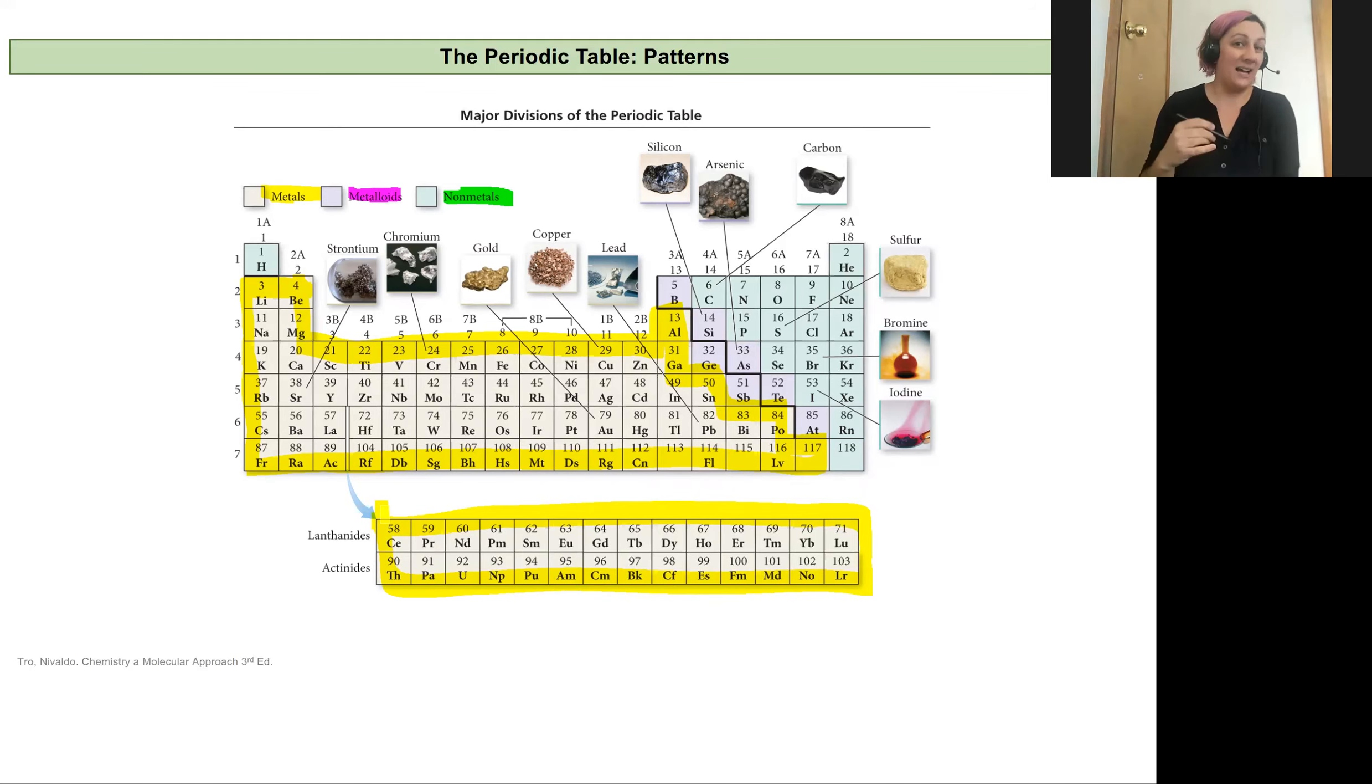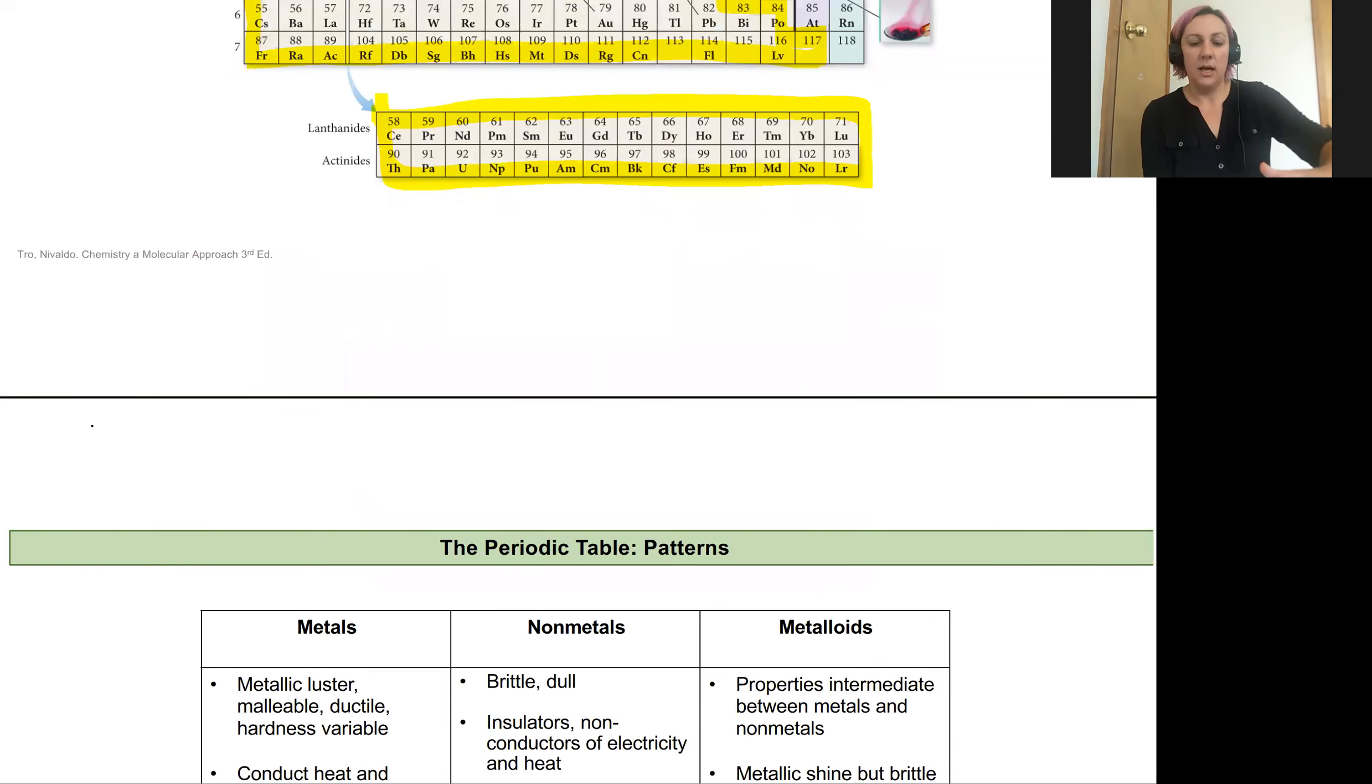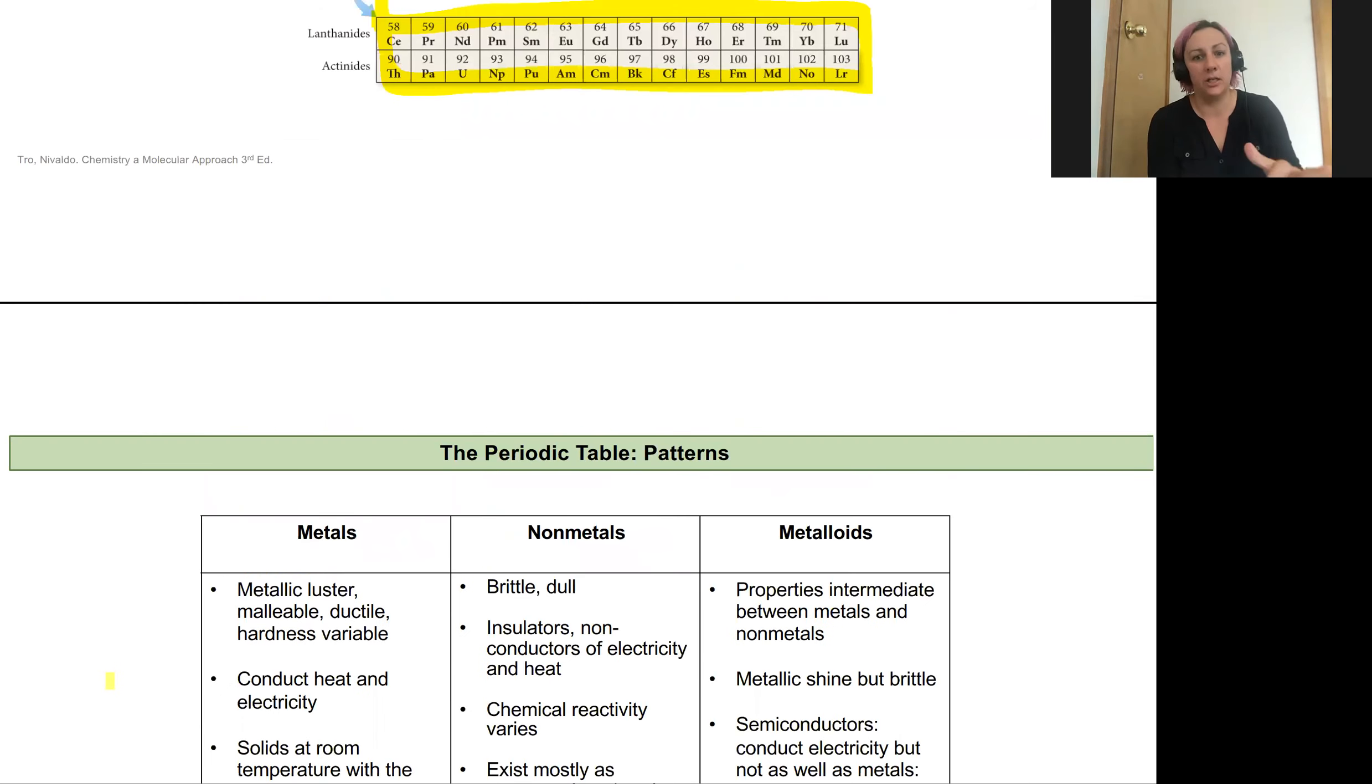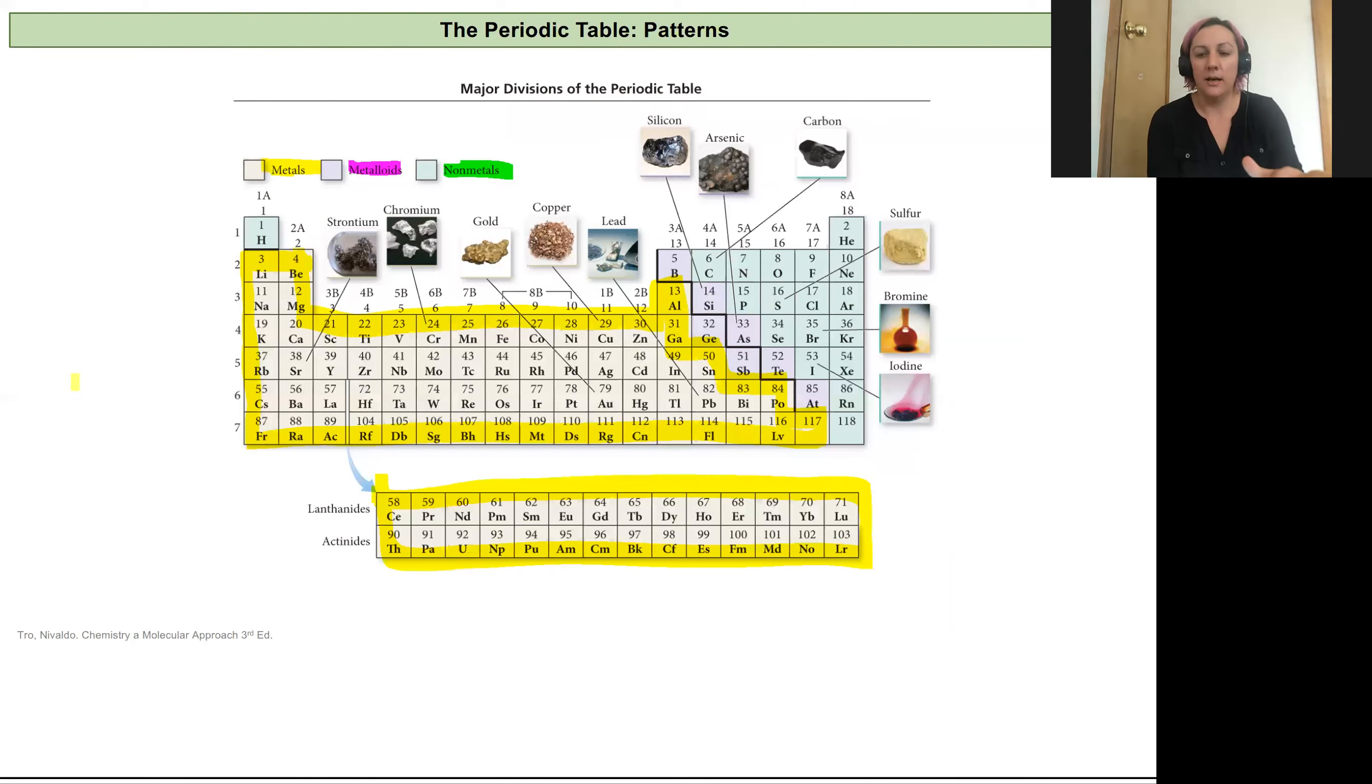So all of these elements are actual metals and they have different properties that we'll talk about here in a bit. Actually we'll just do this now. So our metals are going to be really metallic in their luster. They can be malleable. Their hardness though varies, it's kind of all over the place. But they will conduct heat and electricity at varying levels. And most of them are solids at room temperature. Mercury is the exception and it's a liquid at room temperature. None of them are gases. Their chemical reactivity also varies greatly. I mean we're talking about a lot of elements here and some of them are extremely reactive and some of them are completely inert it seems like. And so those are our metals.